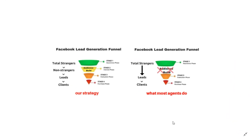Here are two sales funnels side by side. They look similar, but the one on the right doesn't have an audience-build phase in it, while the one on the left does. The one on the right is what most real estate agents do — they post an ad on Facebook, offer some type of lead magnet in exchange for contact information, and then automatically think that person is a credible lead. The reality is that person probably gave their contact information several times over throughout their search online, so you're not the only one with it. The reason it's so hard to close them is because you hadn't established credibility.